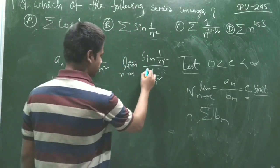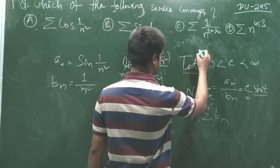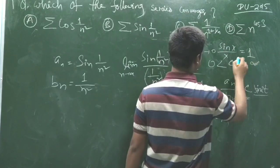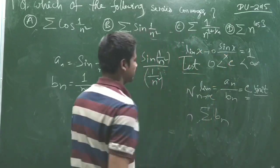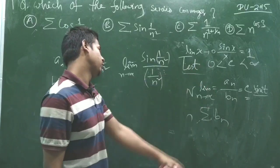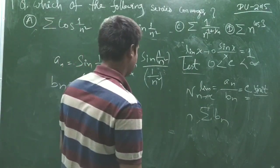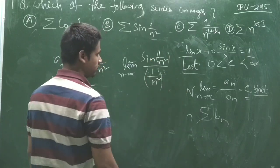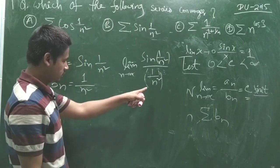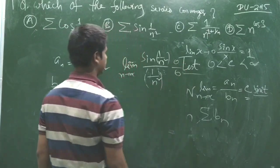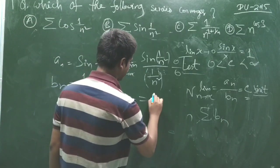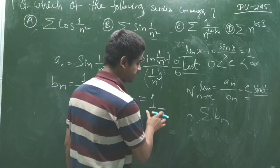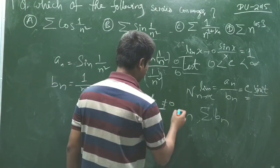We know the standard limit: as x tends to 0, sin(x)/x = 1. You can also solve this by L'Hôpital's rule. Here, when n tends to infinity, 1/n² goes to 0, so we have a 0/0 form. Applying L'Hôpital's rule gives us the limit equal to 1, which is a finite number not equal to 0 and less than infinity.